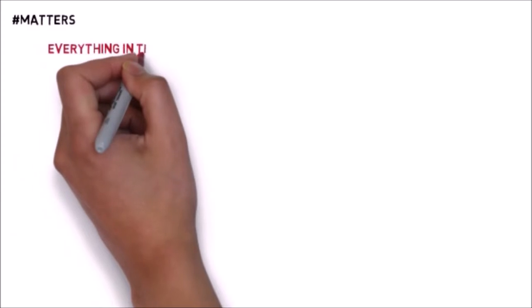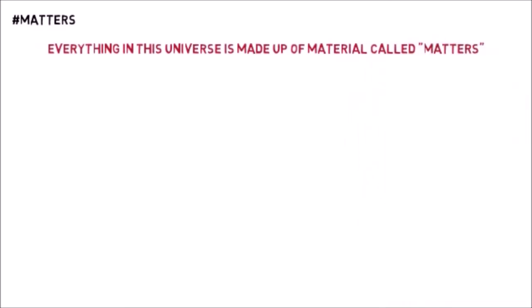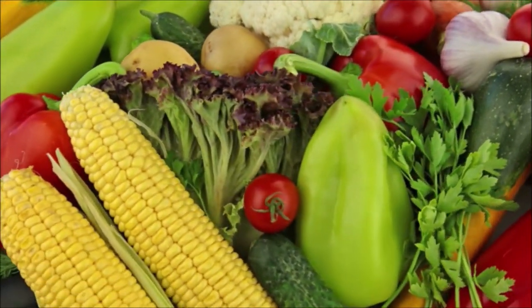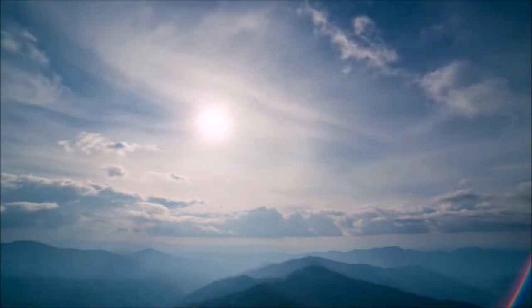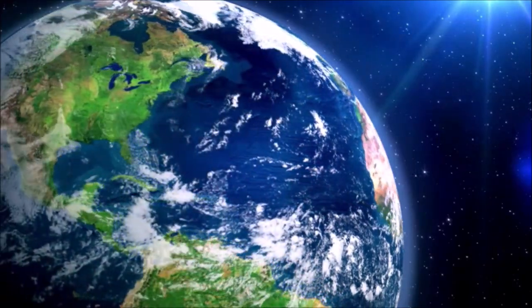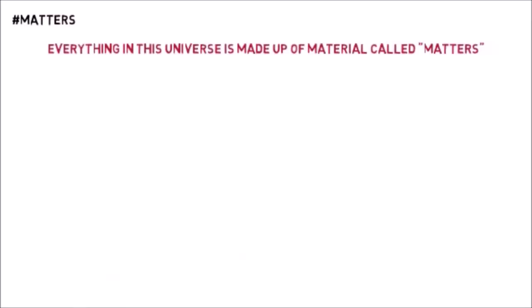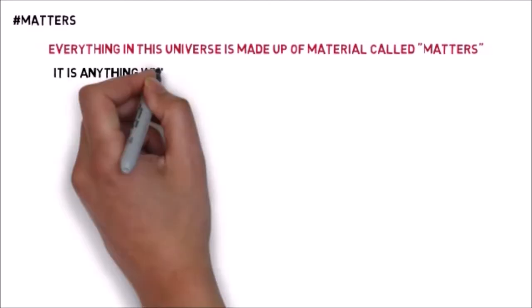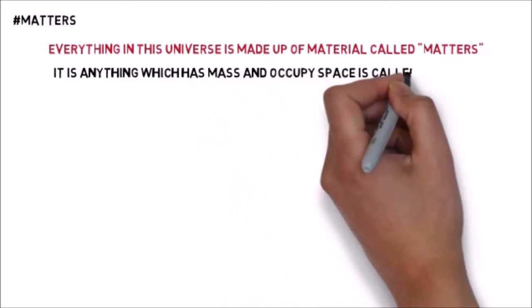Now, what is matter? Everything in this universe is made up of material called matter — the air, food, stone, clouds, stars, planets, and even a drop of water. Everything is made up of matter. We define that anything which has mass and occupies space is called matter.